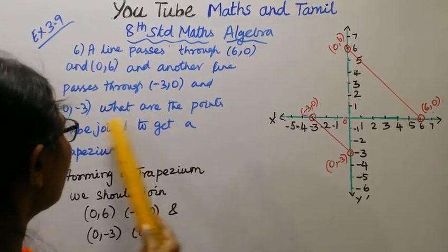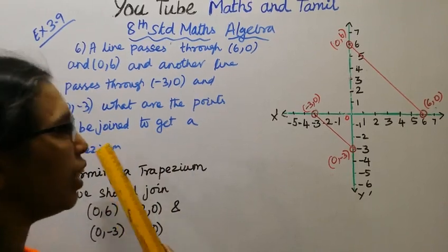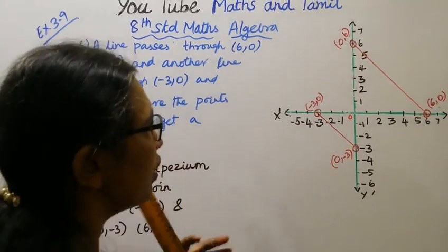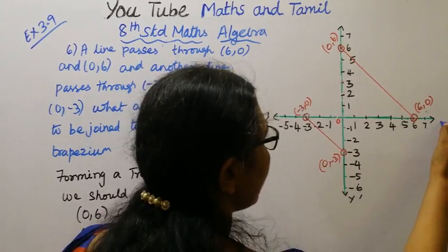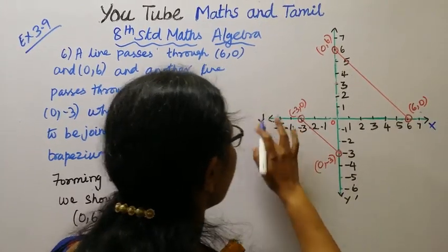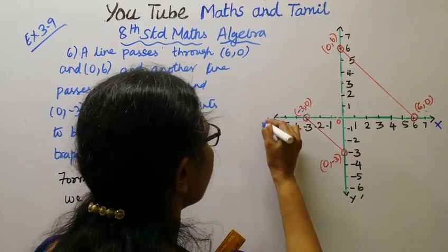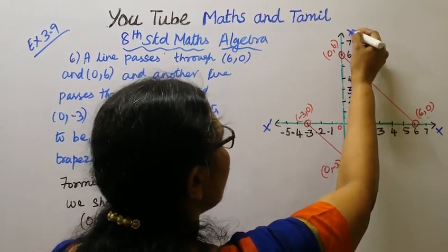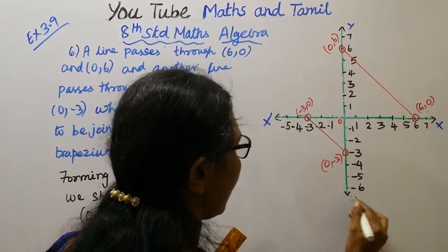What are the points to be joined to get a trapezium? This is the x-axis, this is x-dash, this is y, this is y-dash.